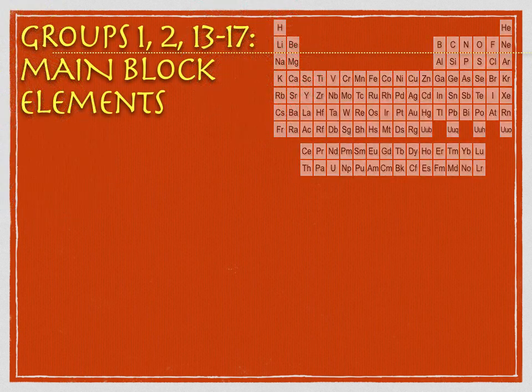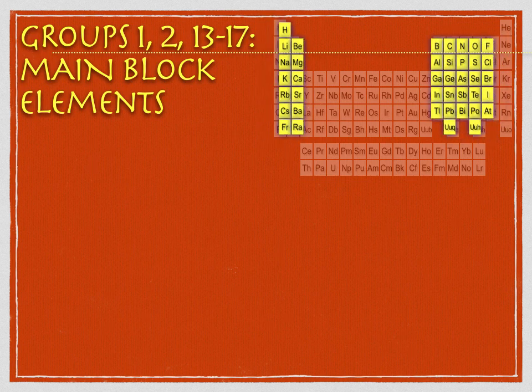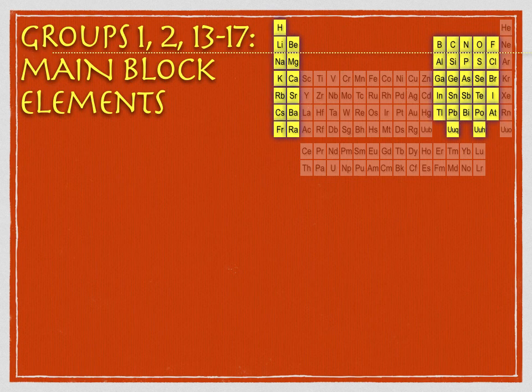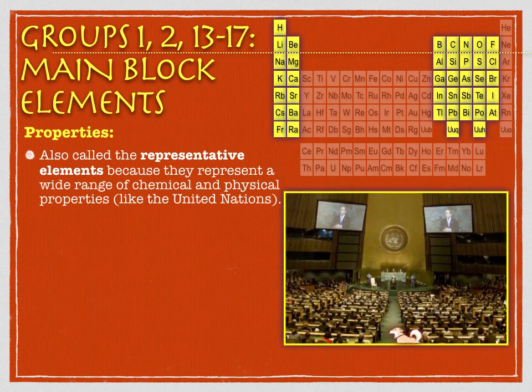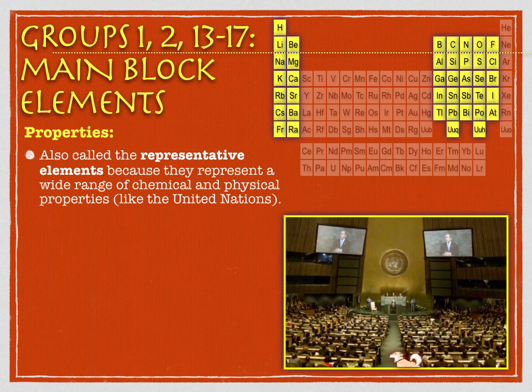The main block elements are a supergroup of other families — groups 1, 2, 13, 14, 15, 16, 17 — three of which we've already talked about: the alkali metals, the alkaline earth metals, and the halogens. They're often called the representative elements because they're representing so many different properties found throughout the periodic table.